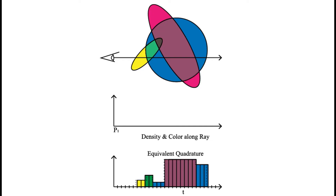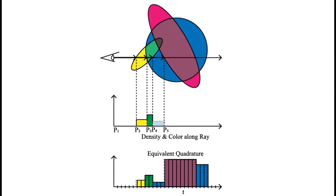Our approach does not make any assumptions about how primitives overlap, and is able to exactly integrate the volume rendering equation across our field of primitives. This is possible because our field is composed of constant density and color ellipsoids. Imagine casting a ray through this field and evaluating the color and density along the ray. These color and density values would follow a step function, with the discontinuities located at the surfaces of the ellipsoids. We can trace the steps of the function by repeatedly calling the closest hit function in a ray tracing API, and integrating the color and density along the way.